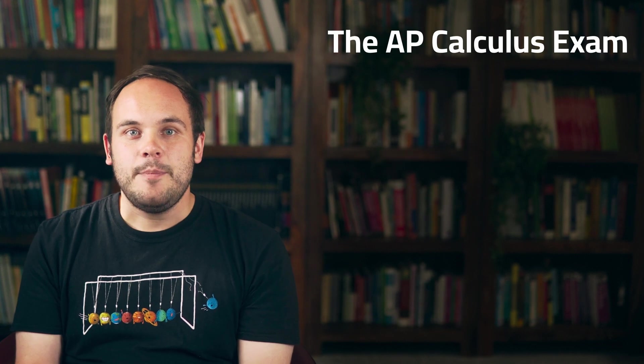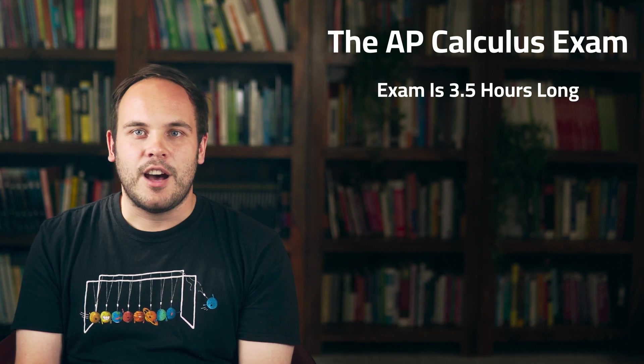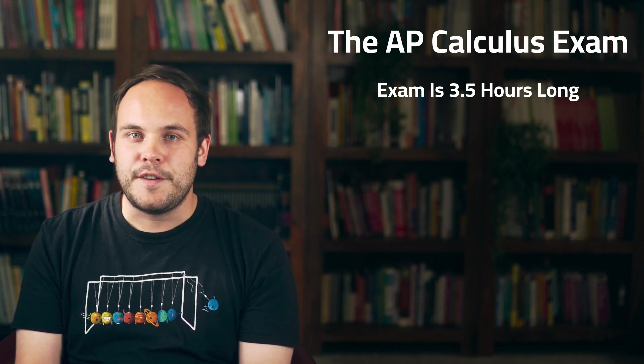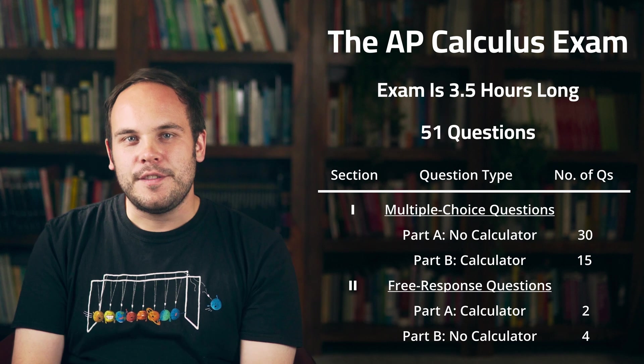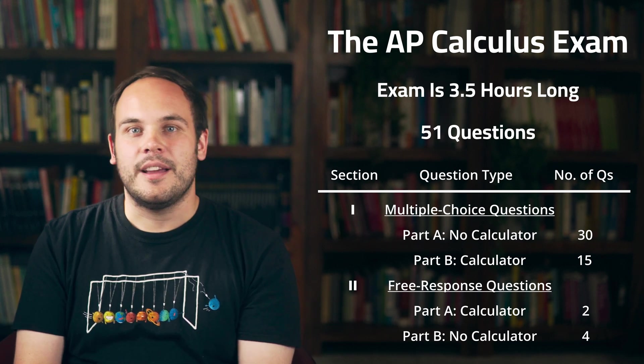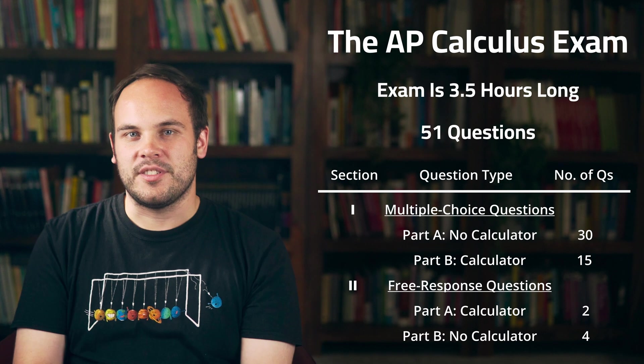For both courses, the AP Calculus exam is three and a half hours long and consists of 51 questions. The first part of the exam contains 45 multiple choice questions and the second part contains six free response questions.